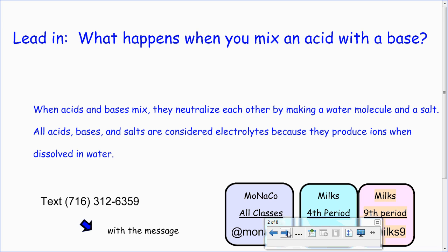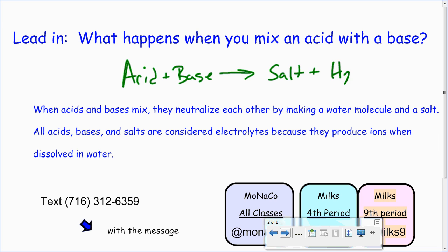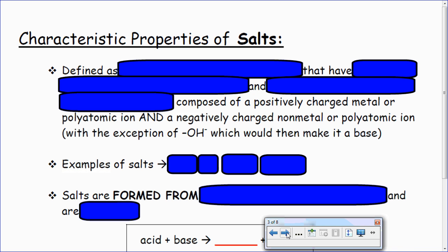So what happens when you mix an acid and base? Last lecture we saw: acid plus base makes salt plus water, H2O. The H from the acid and the OH from the base made H2O and something else. We are going to get into more depth about that.